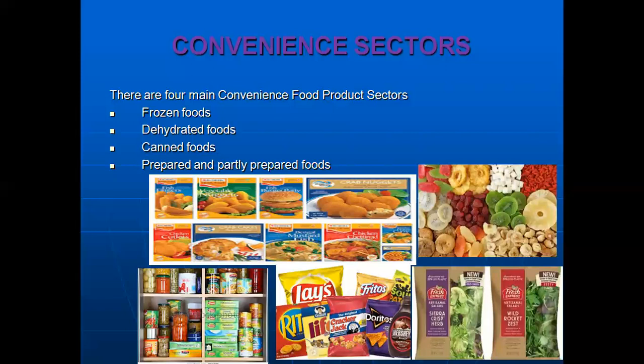The last but not least sector is prepared and partly prepared food. An example of prepared food, as you can see in the picture, is chips — layers of chips which are prepared and ready to eat. For partly prepared food, there is lettuce in the picture which is washed and cut, and you can use it later while making salads. So these are the four main sectors of convenience food.